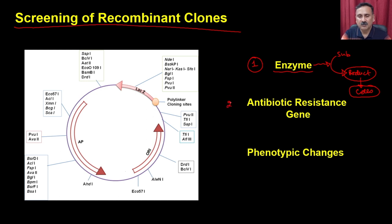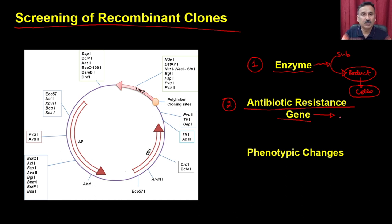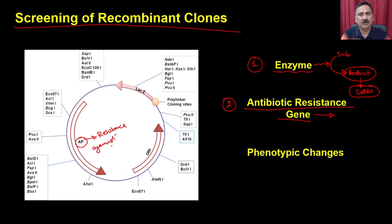The second and most popular method is working with antibiotic resistance genes. This antibiotic resistance gene provides survival of the host cell which has taken up the DNA. For example, in this particular vector, it has the ampicillin resistance gene. This ampicillin resistance gene provides resistance against ampicillin, because the plain vector or plain host will not survive as it does not have the ampicillin resistance.